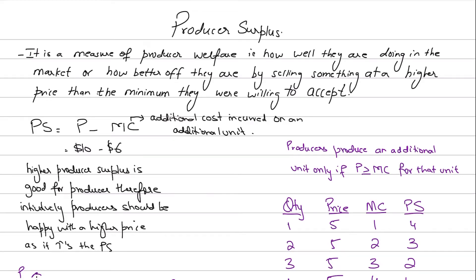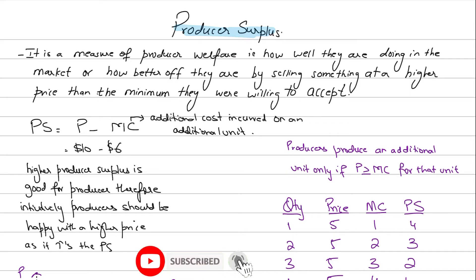Welcome back. This video will be on producer surplus using the marginal cost approach. Producer surplus is a measure of producer welfare — it measures how better off producers are since they are selling the product at a price higher than the minimum they are willing to sell it for. It's essentially a measure of producers' happiness or welfare.